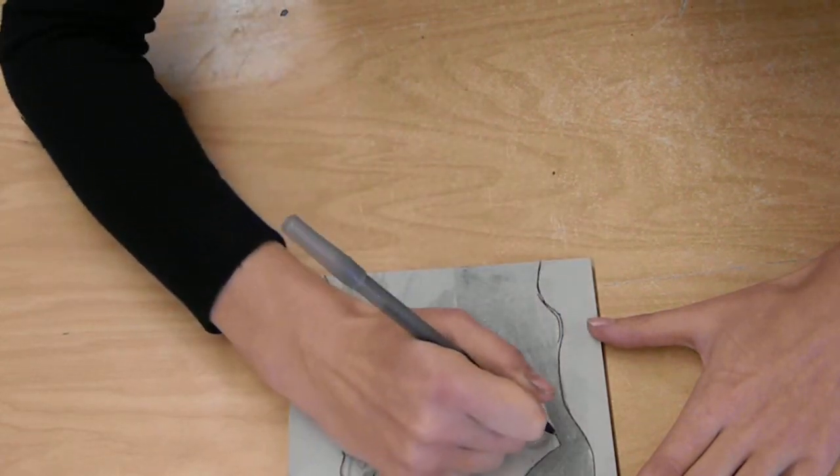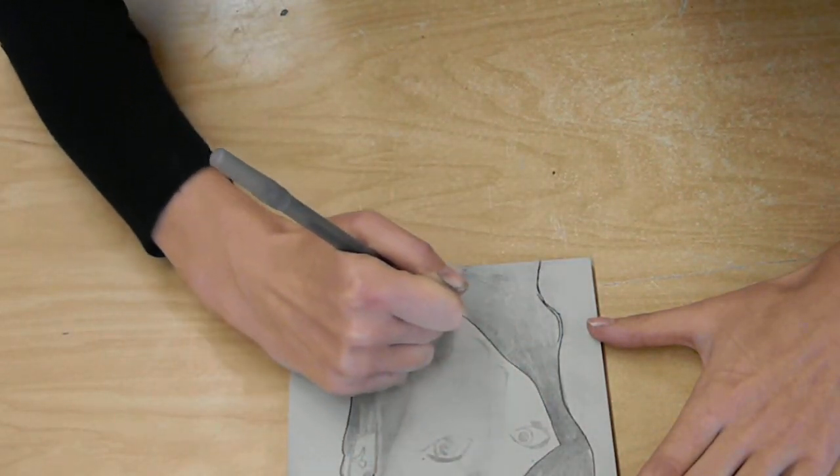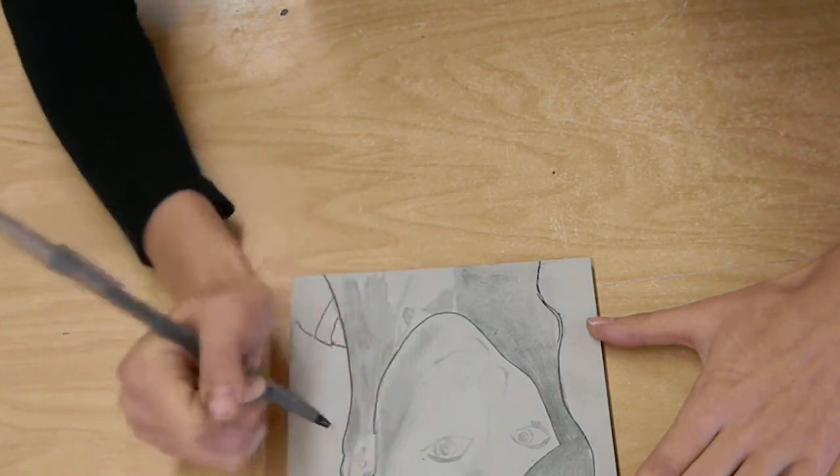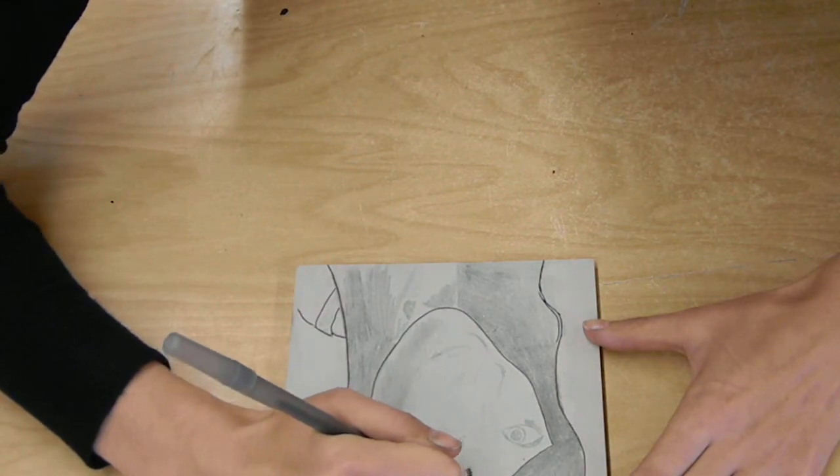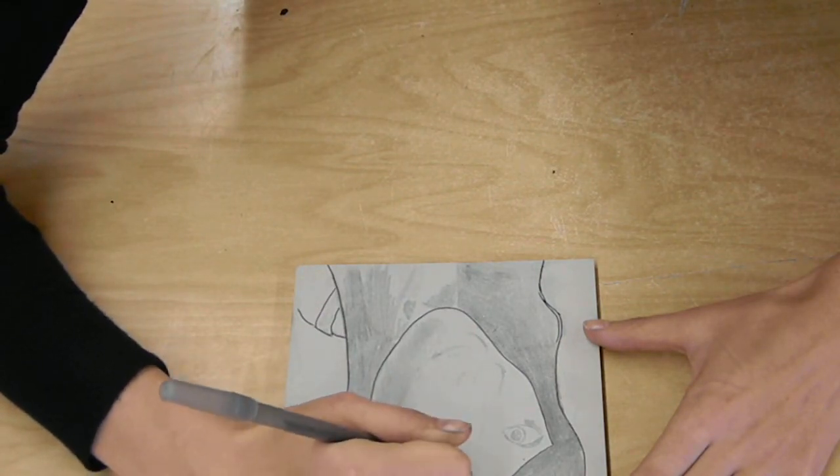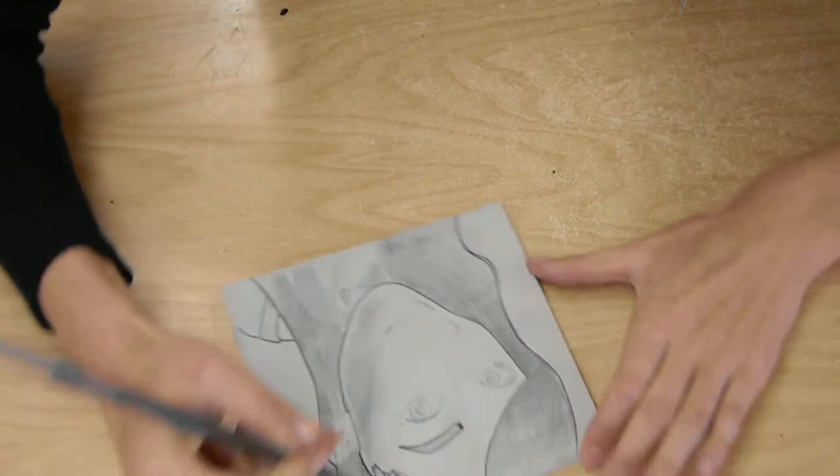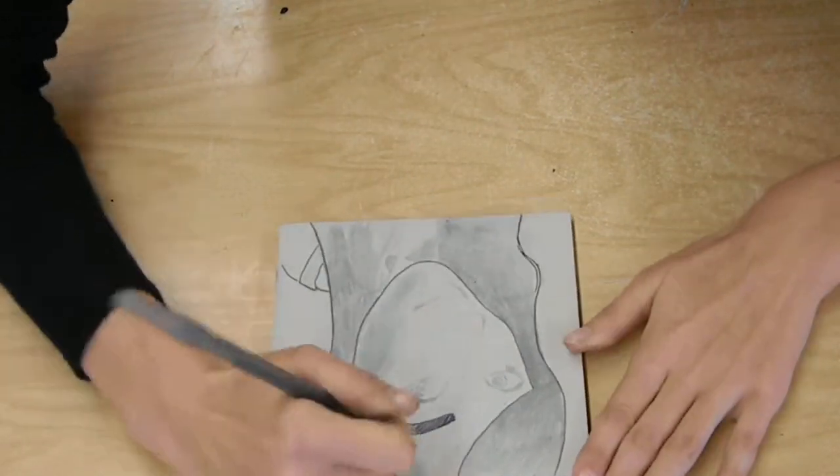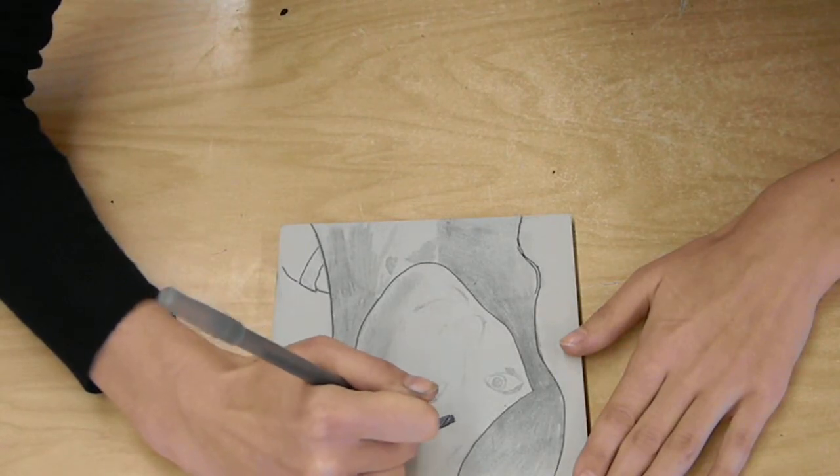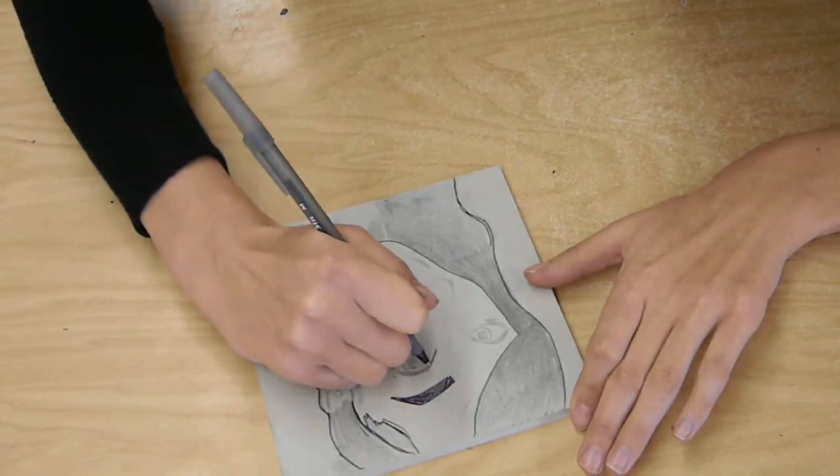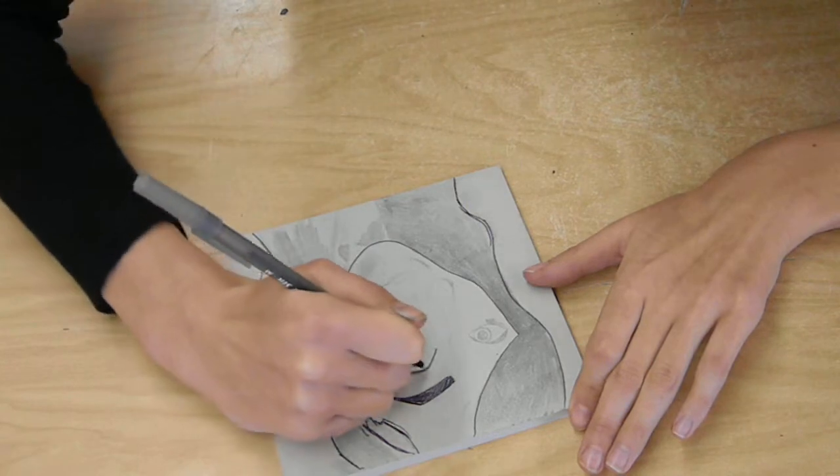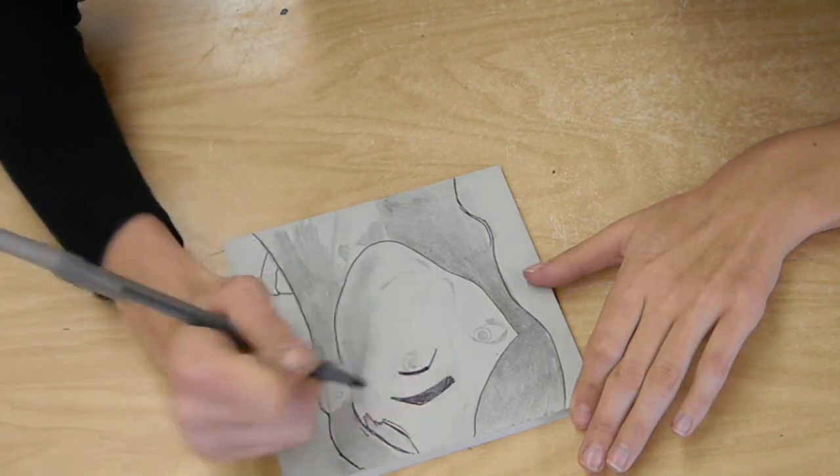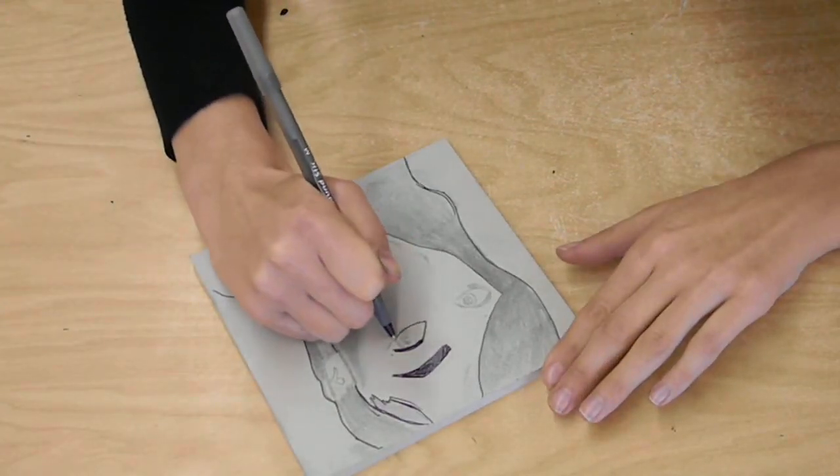I'm just going in outlining everything in pen, going over my eyebrow. You want to make sure you're really coloring everything. I'm going to go in and actually color in the dark spots.